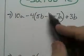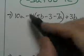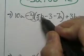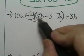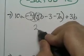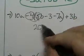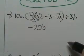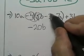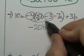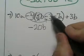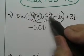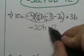Number seven, same thing — go ahead and use distributive property first. So I'll take negative 4 times 5: four times five is 20, so that's 20b. And there's one negative, so the answer is negative. Next I'm going to multiply negative 4 times negative 3: four times three is 12, and there are two negatives — two negatives cancel when multiplying — so that's a plus.